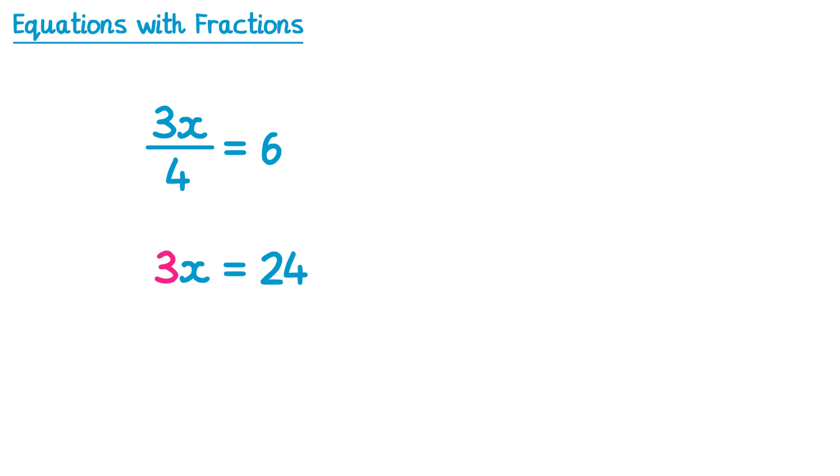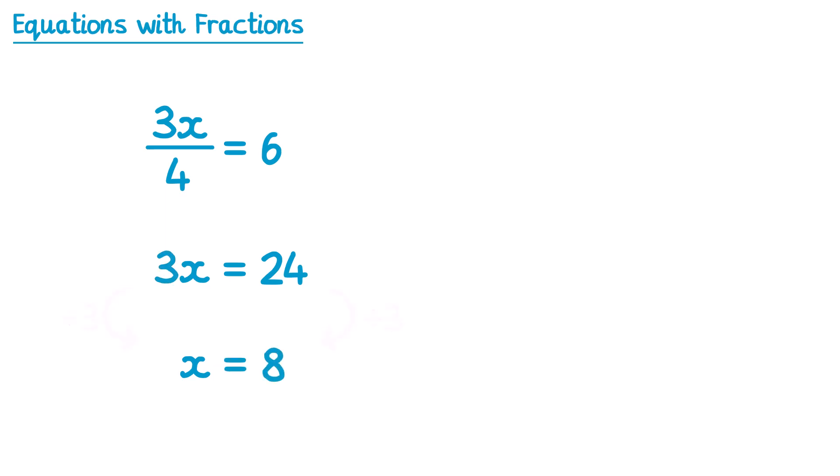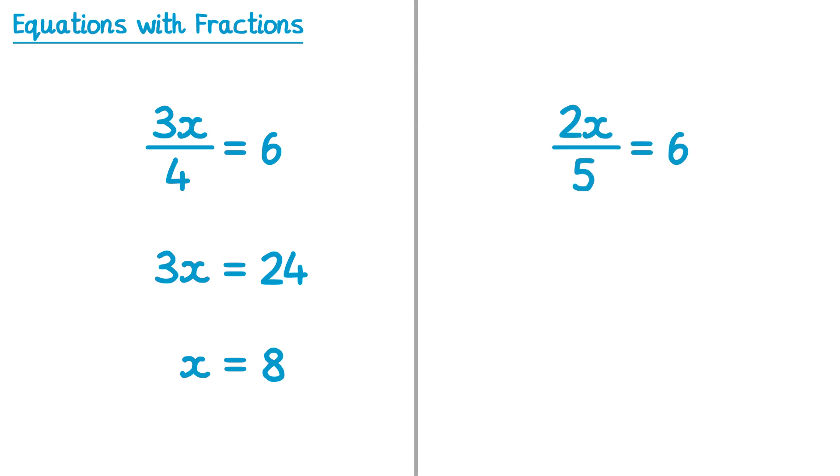We're now left with a one step equation: 3x = 24. Since 3x means 3 multiplied by x, the opposite is dividing by 3. So we divide by 3 on both sides. On the left this gives us x, and on the right 24 divided by 3 is 8. So the solution to this equation is x equals 8.